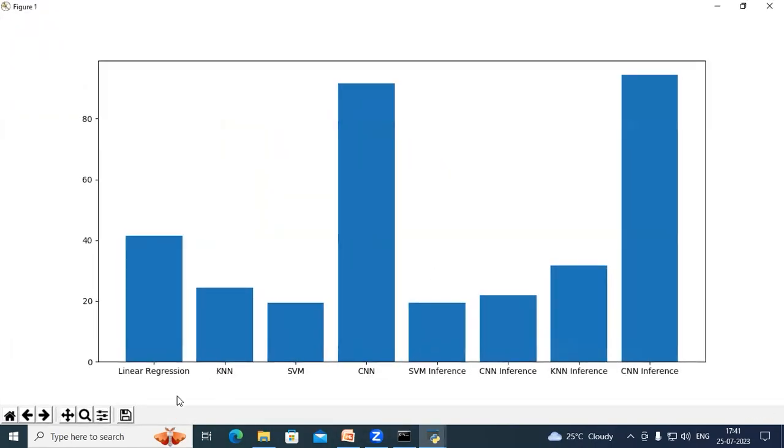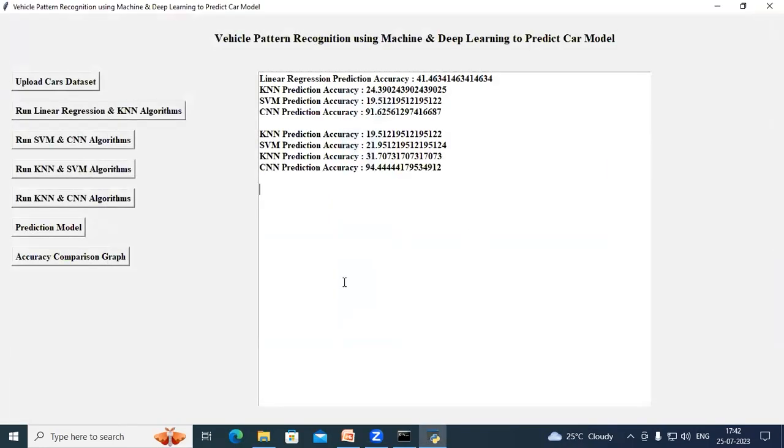So in this graph on x-axis, I have the names of all the models used and on y-axis, I have the accuracy. We can see CNN is performing well on both pattern and inference features. Close this graph and similarly, we can upload any image and get its model predicted.